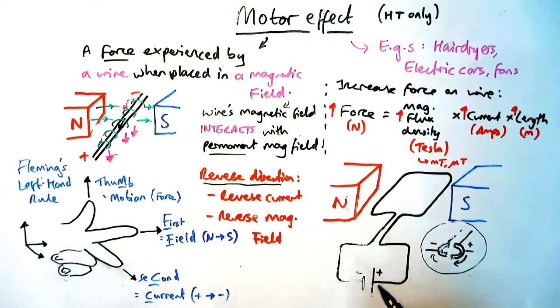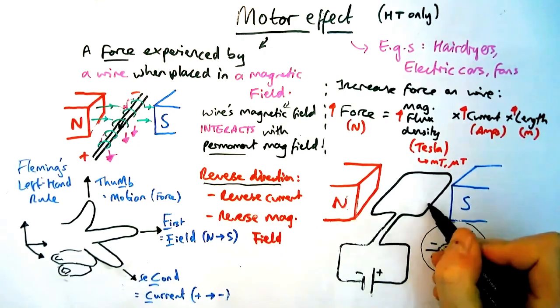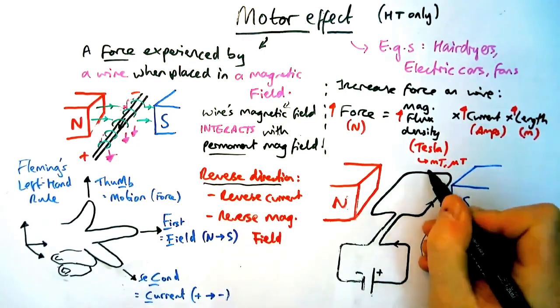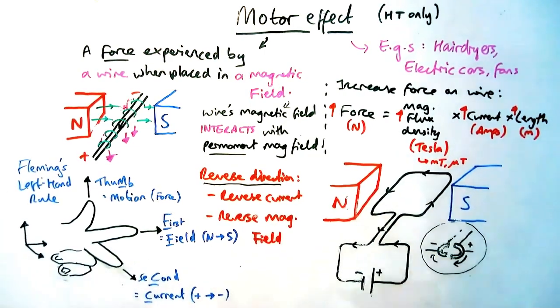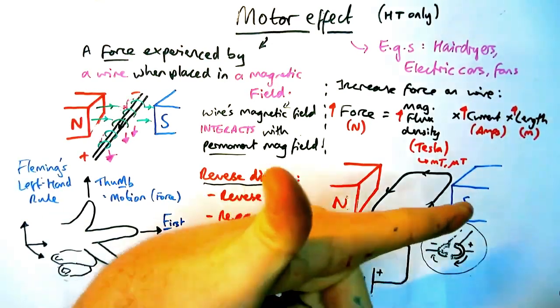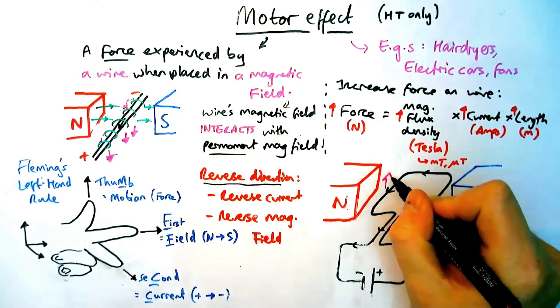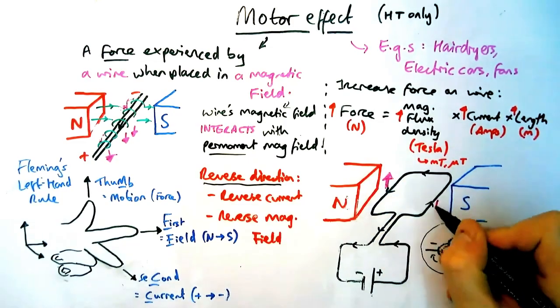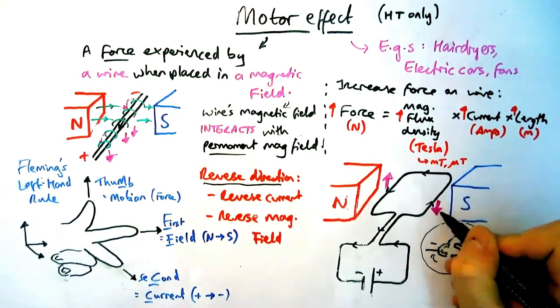Instead of one piece of wire we've now got a coil of wire, so a coil being a loop inside the magnetic field. It's connected to a power supply which has a positive and negative sign and I'm going to draw in the arrows to show which way the current's flowing. Sometimes questions won't do this so be aware of that, it's always helpful to draw them in. So we're using Fleming's left hand rule and on the left hand side the current's going to come towards us so it's going to move up same as before.